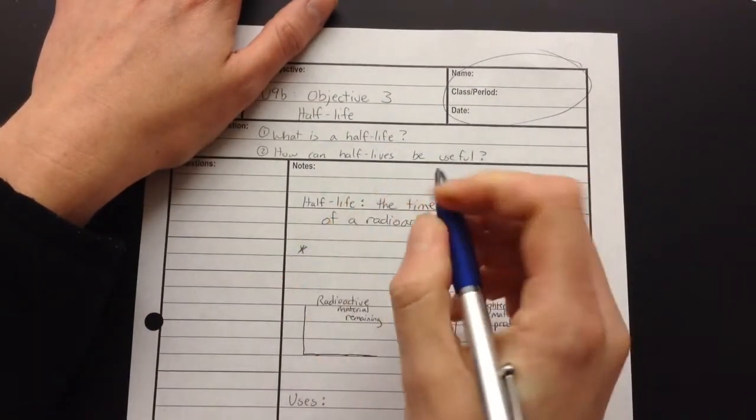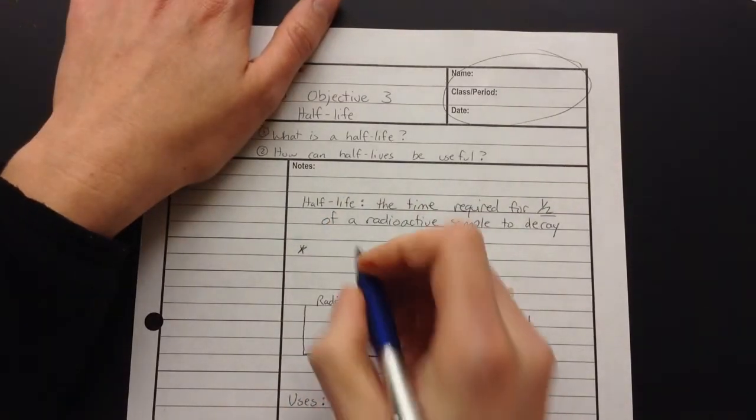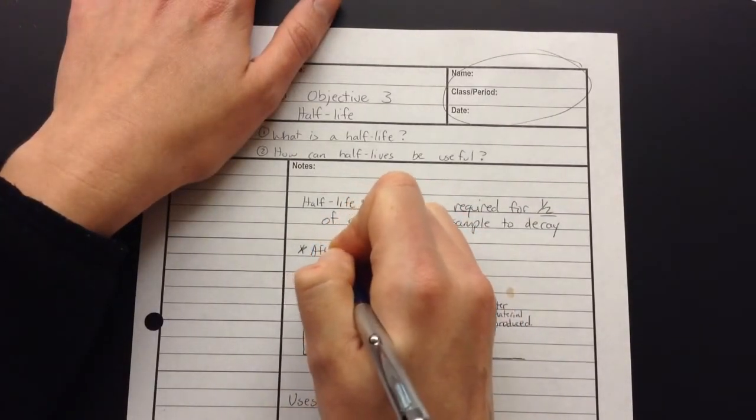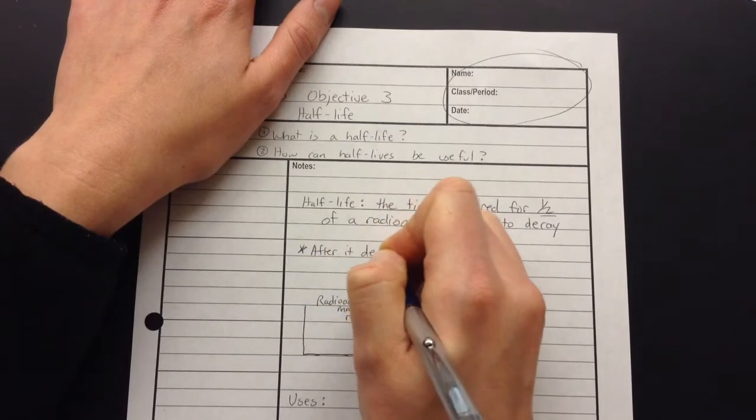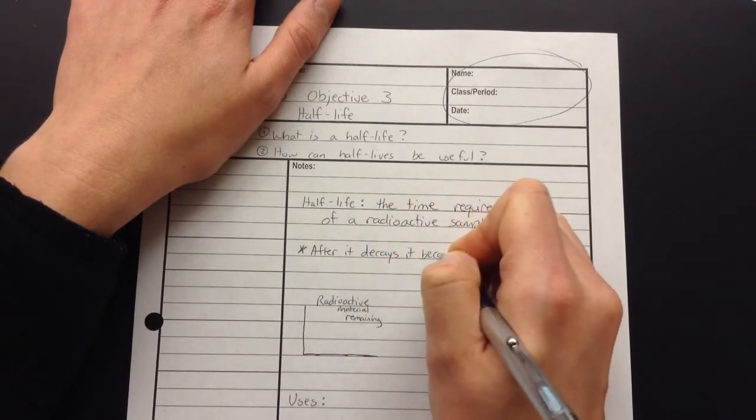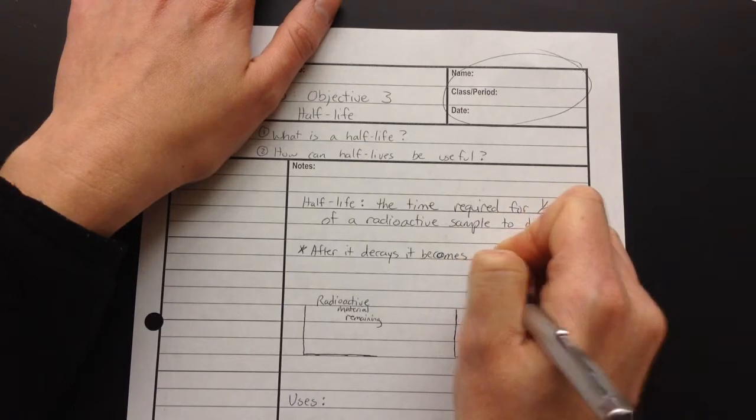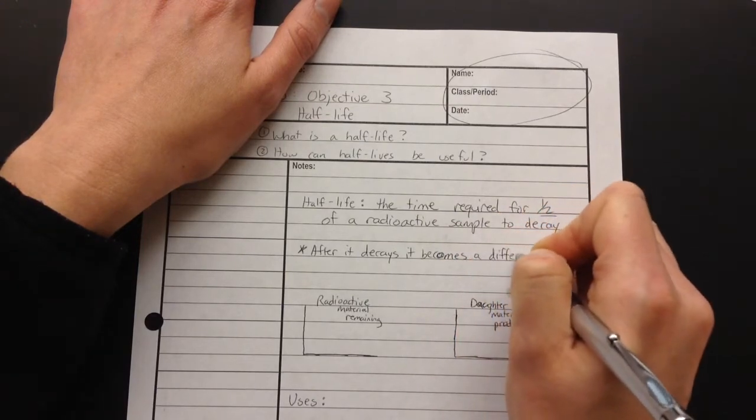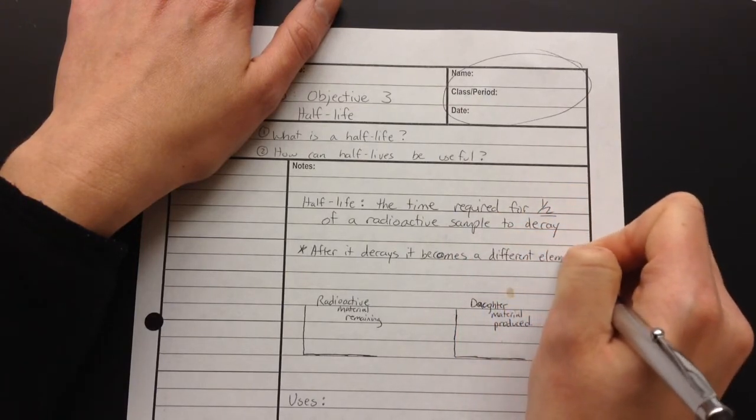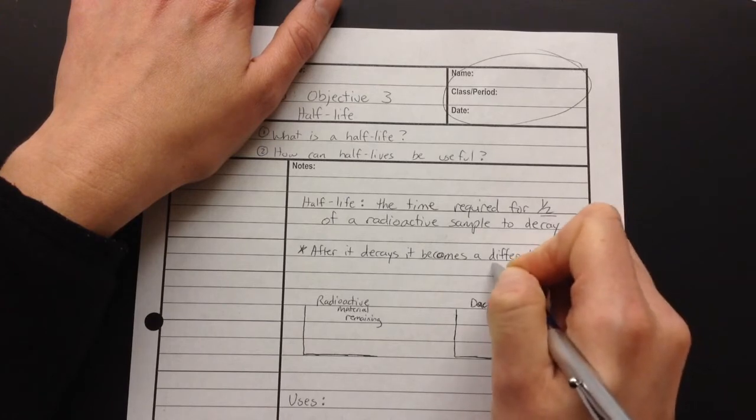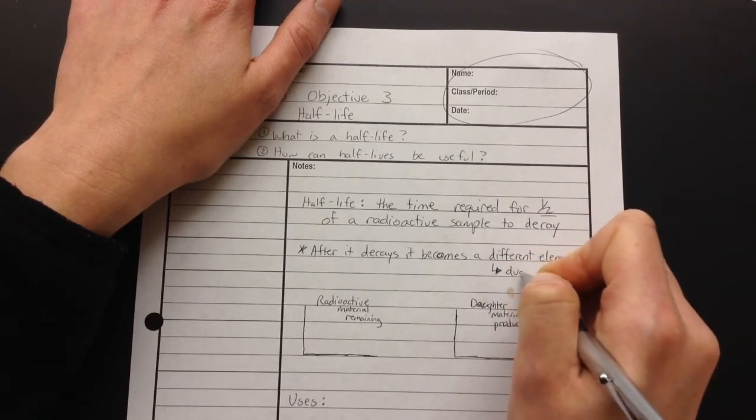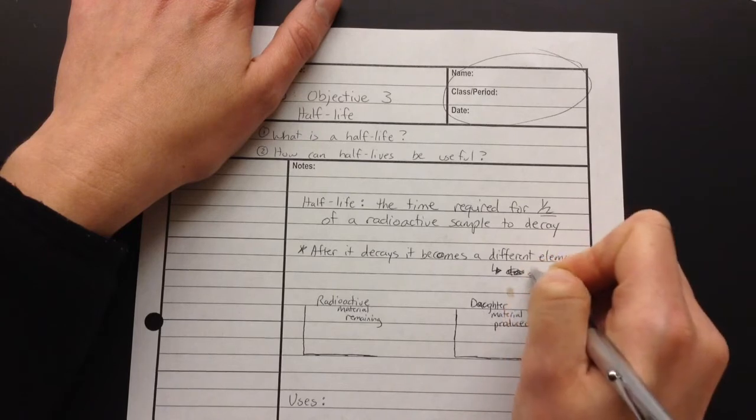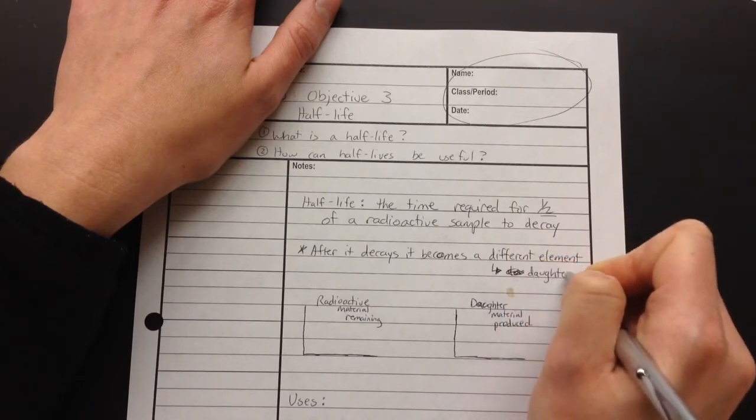So a quick question here, what happens to the stuff after it decays? After it decays, it becomes something else, a different element or a different material. And that different element is sometimes called the daughter element.